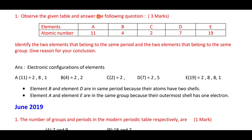Electronic configurations: A is 2,8,1; B is 2,2; C is 2; D is 2,5; E is 2,8,8,1. Elements B and D are in the same period because they both have two shells. Elements A and E are in the same group because the outermost shell has one electron each — same valence electrons.